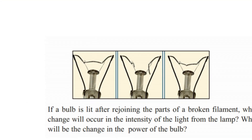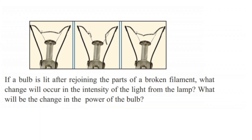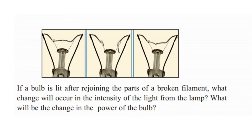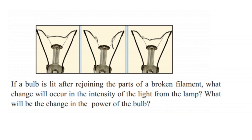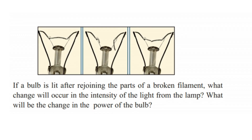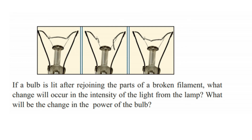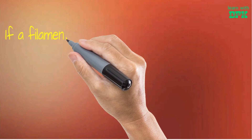If a bulb is lit after rejoining the parts of a broken filament, what change will occur in the intensity of the light from the lamp? What will be the change in the power of the bulb? If a filament gets broken, its length decreases. One filament is broken — that is the new one.